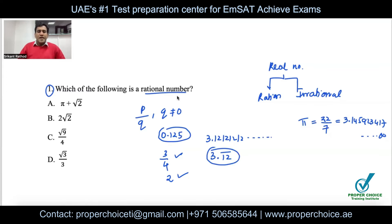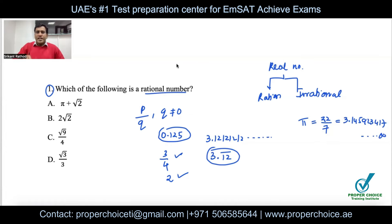In the exam, rather than memorizing, take the help of a calculator. Whichever number is given, put it in the calculator and convert it to a decimal. If it is a terminating decimal — meaning after the decimal point you have only a few digits like 125 — it is rational.